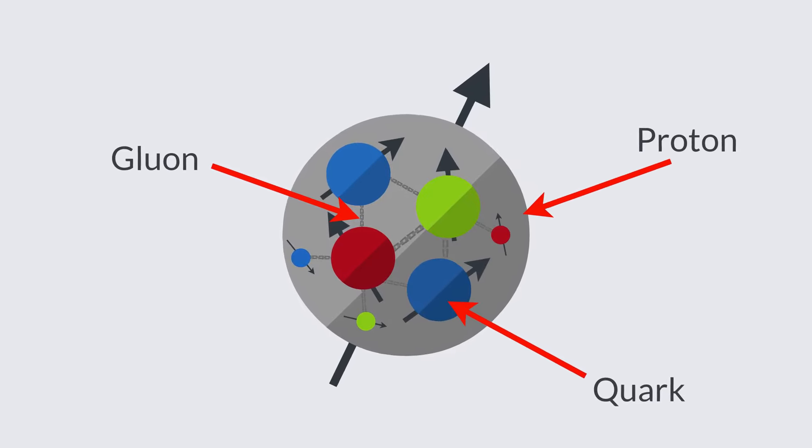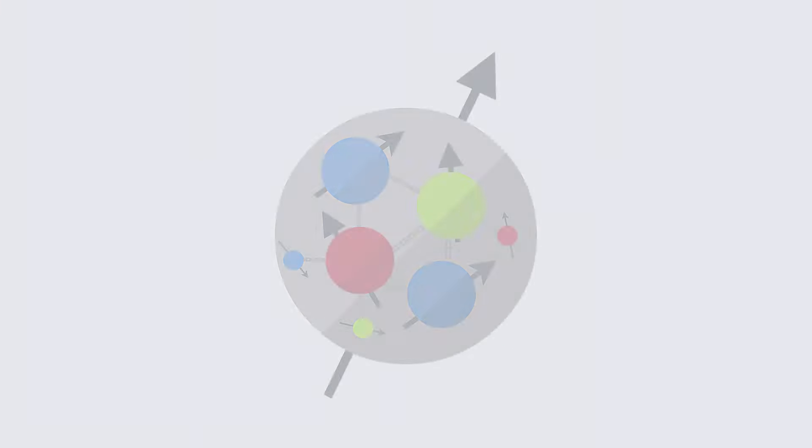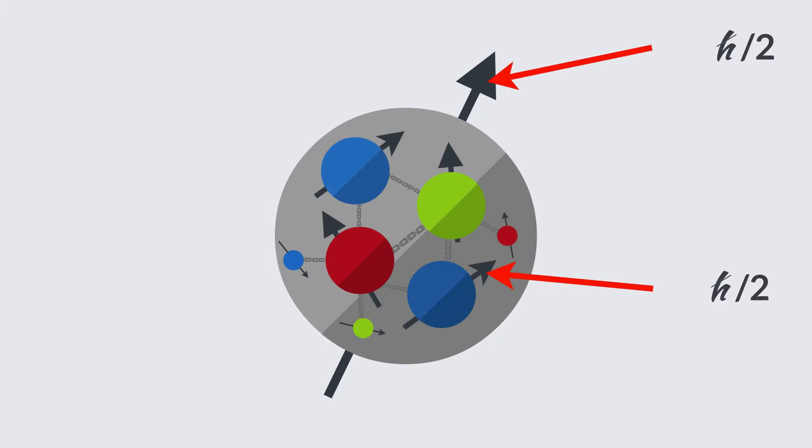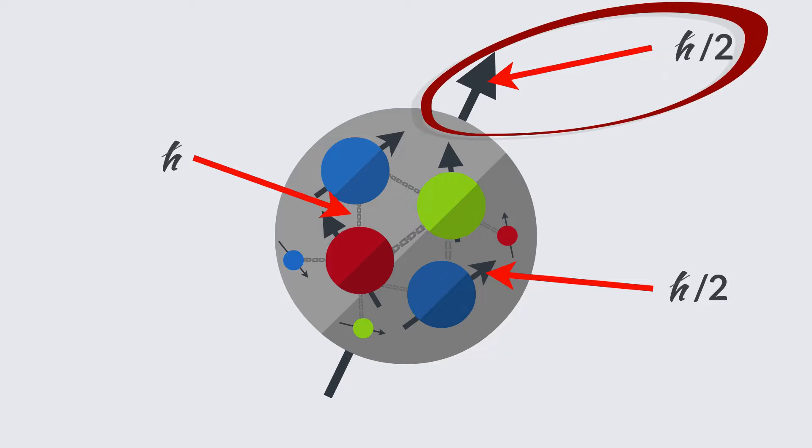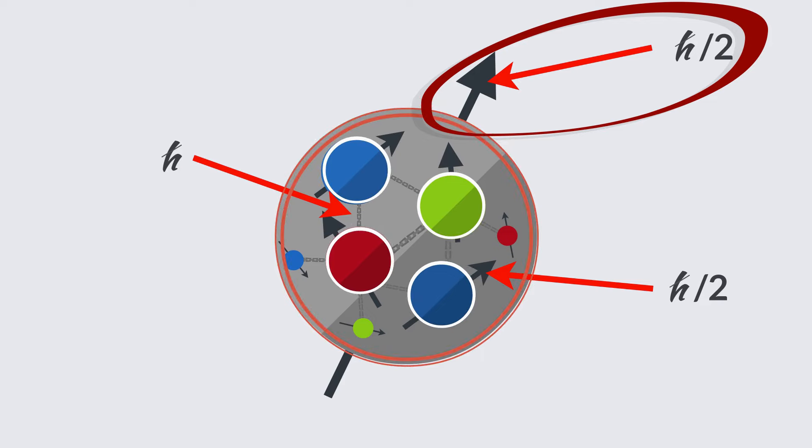Protons, neutrons, electrons, and quarks all have a spin of h-bar over two, while gluons have a spin of h-bar. Since a proton is composed of quarks and gluons, its spin of h-bar over two must arise from the sum of its parton spins and orbital angular momenta.